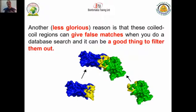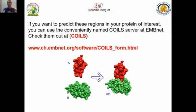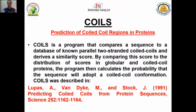So how can we find this region in our protein — how can we discover it or filter it out? Simply, there are some programs that can do this. One of them is called COILS, and you can find this program on the CH-IMPINET website. There is a link you can find there. You can also find it in ExPASy if you are familiar with that. COILS can help you in the prediction of coiled-coil regions in your protein.